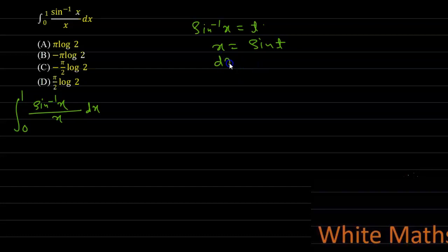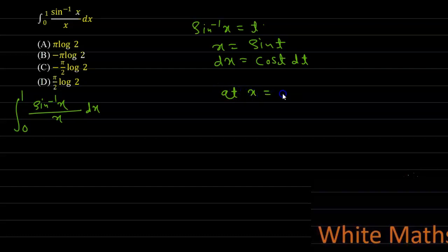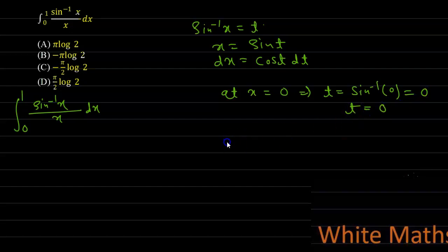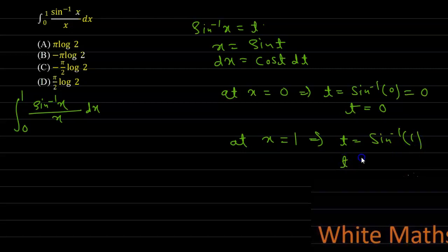On differentiating both sides, we get dx equal to cos t dt. For the new limits: at x equal to 0, we get t equal to sine inverse 0, which is 0, so t equal to 0. At x equal to 1, we get t equal to sine inverse 1, which is pi by 2, so t equal to pi by 2. The new limit will be 0 to pi by 2.